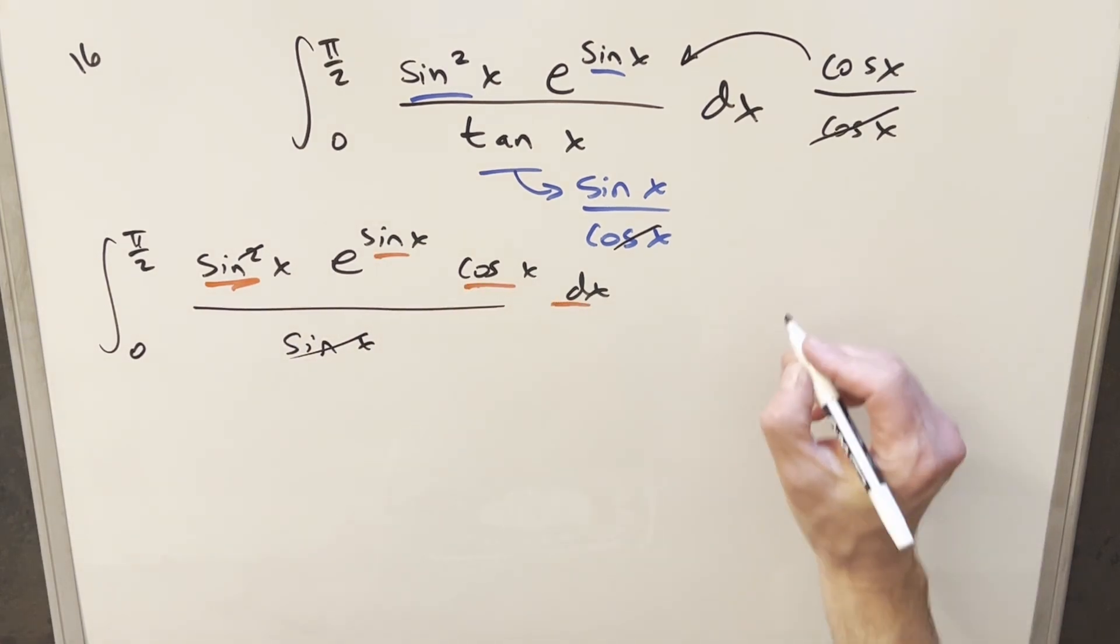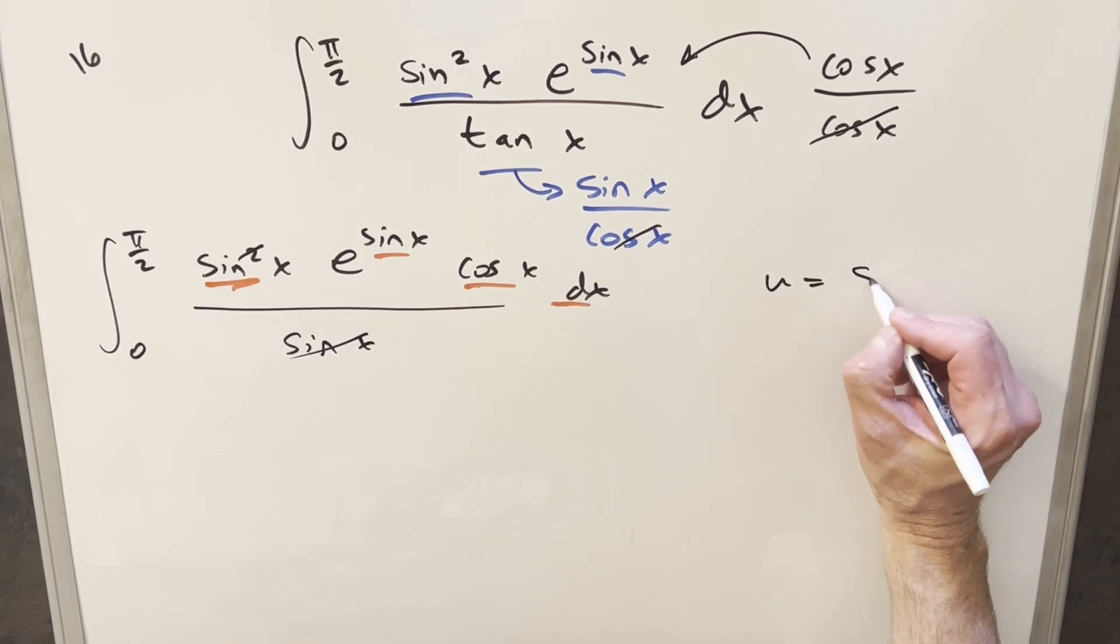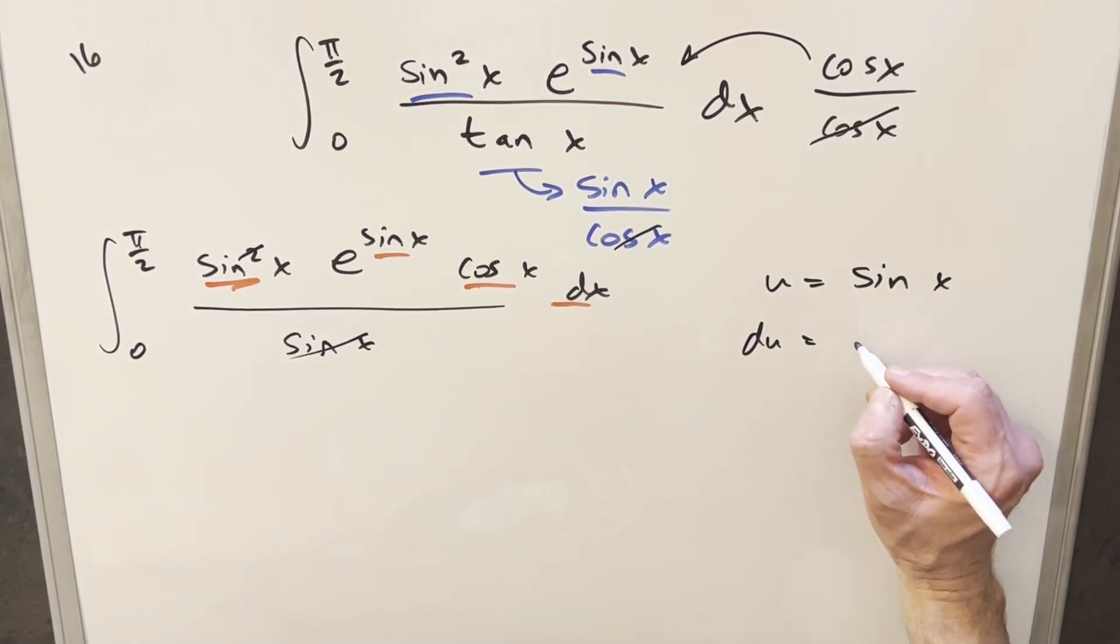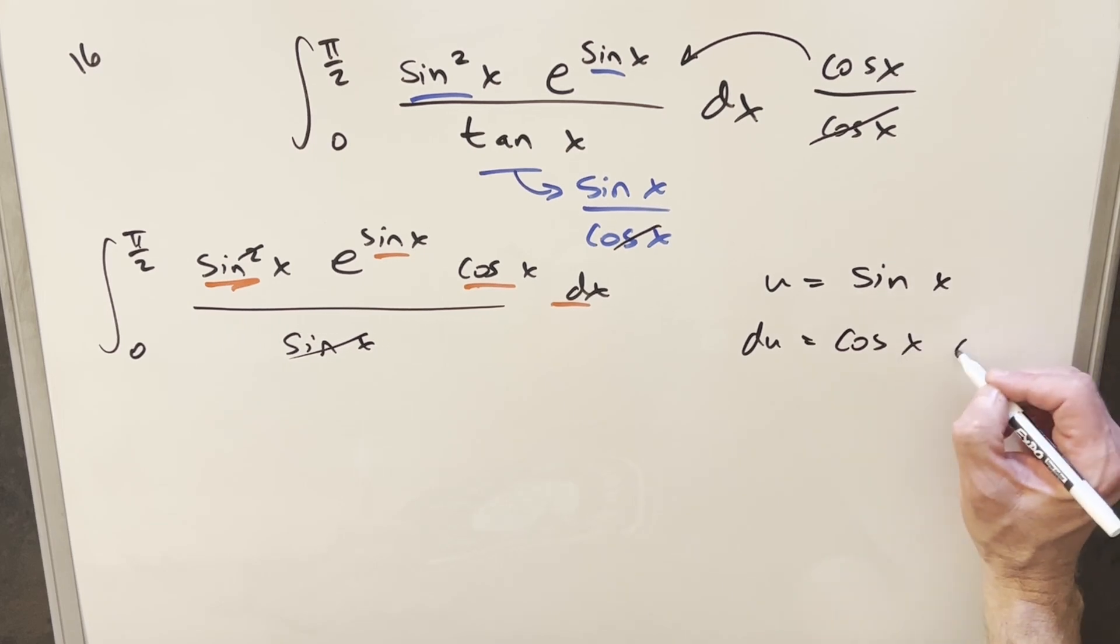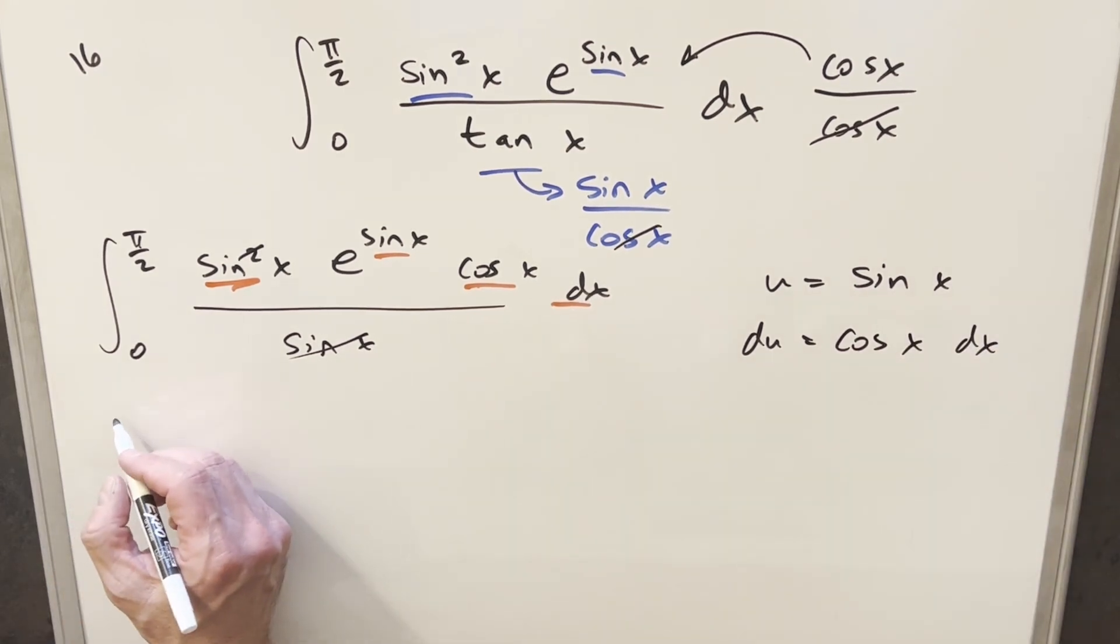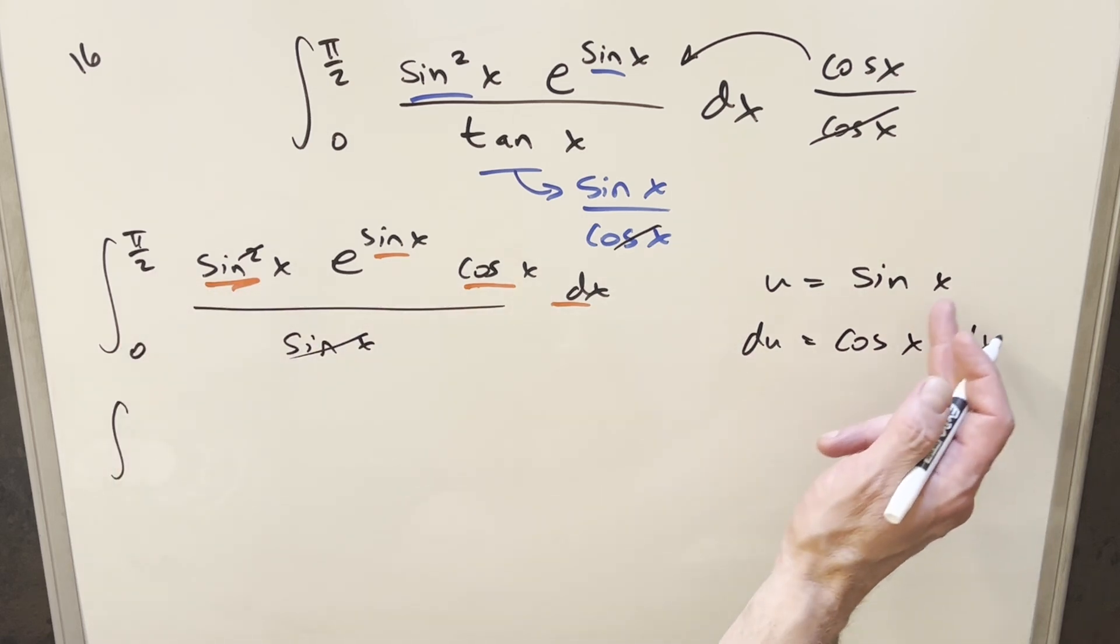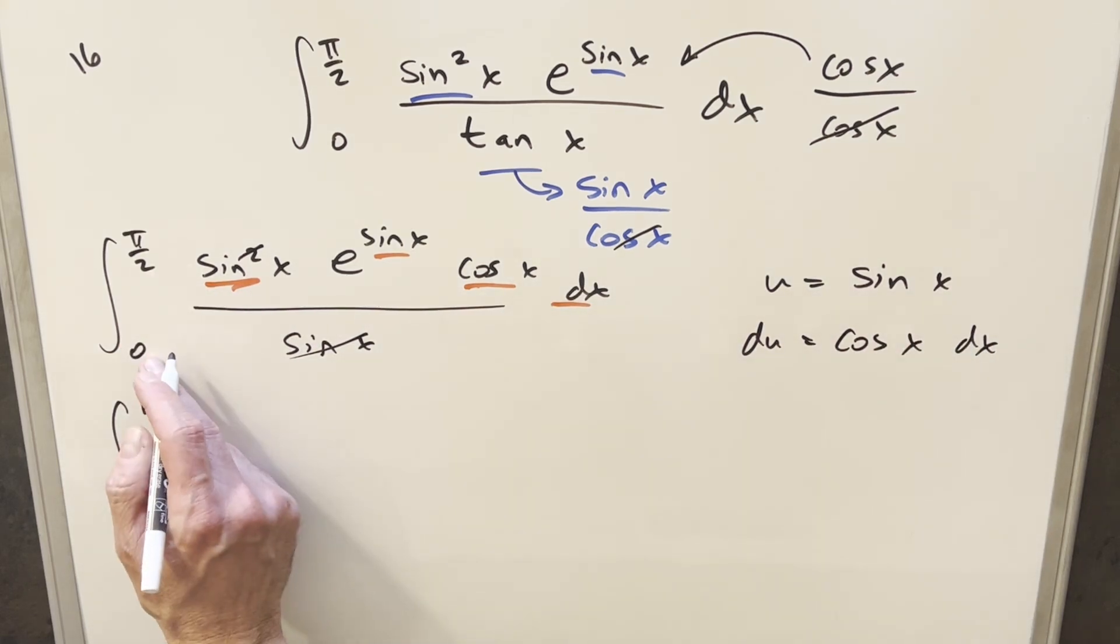So what I'm going to do for my u substitution, we'll come over here, we'll just say we'll set u equal to sine x. We'll take a derivative, so du is going to be just cosine x dx. I'll go ahead with this substitution. So let's update our bounds. So first pi over 2, plugging pi over 2 in here, sine pi over 2 is going to be 1. Then it's 0, sine of 0 is just 0.